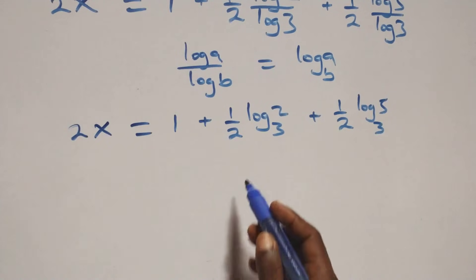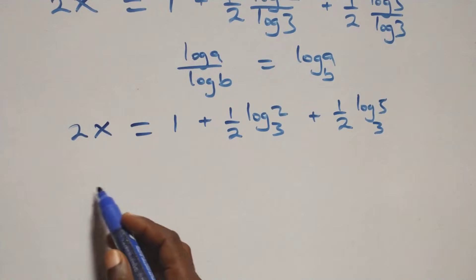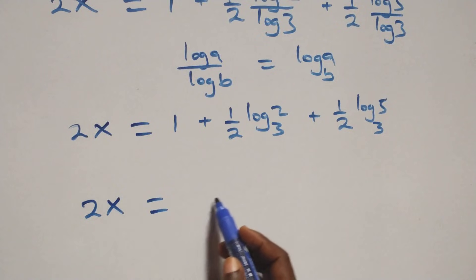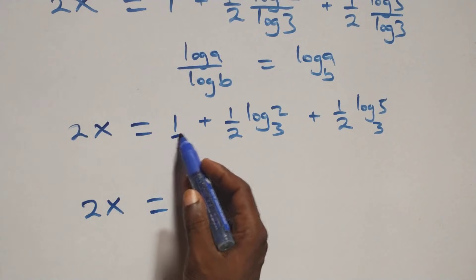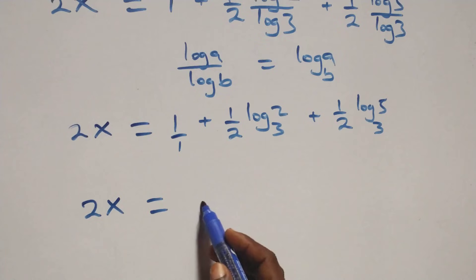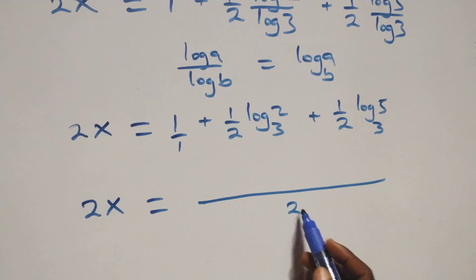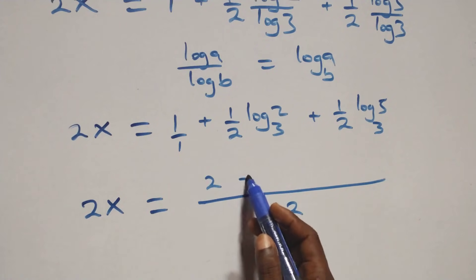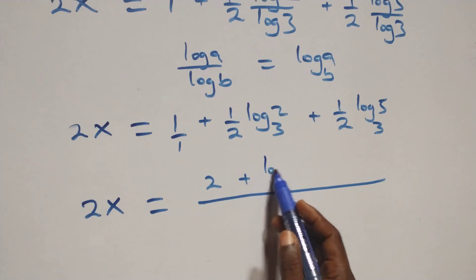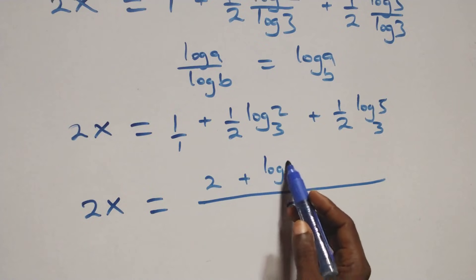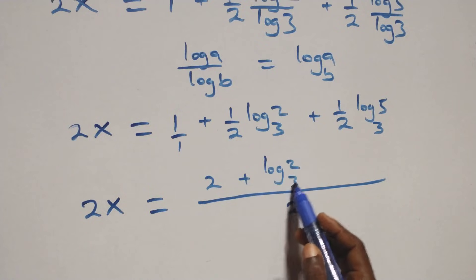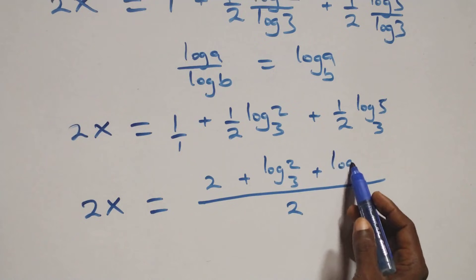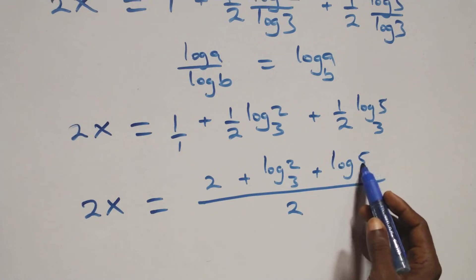Then we bring everything together as a single fraction. We have 2x equals to 1 over 1 — written with denominator 2 — and here we have plus log base 3 of 2 plus log base 3 of 5, all over 2.